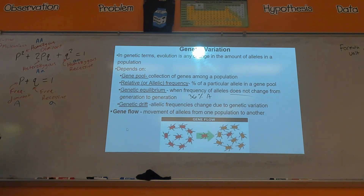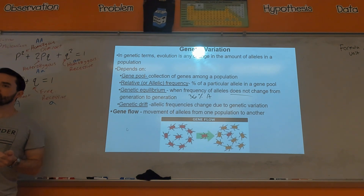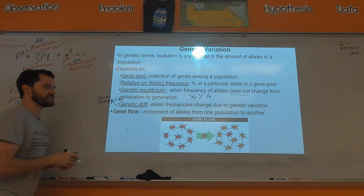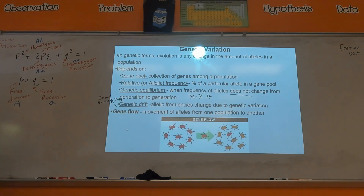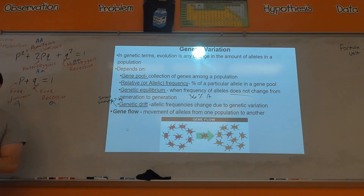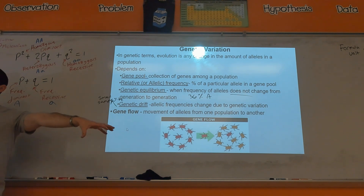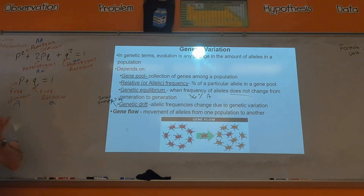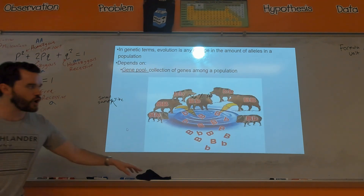Genetic drift is like flipping a coin — if you flip a coin 10 times you should get five heads and five tails, but you may not because you have a small sample size. Genetic drift means small populations can get changes in allele frequencies just because of chance, not because of actual genetic variation. For example, if I randomly grab 10 students from this school, there's a good chance they wouldn't reflect the actual demographics of the school — that's just random chance, and that's genetic drift.